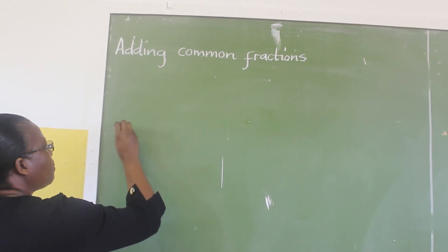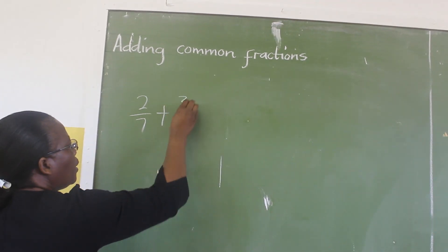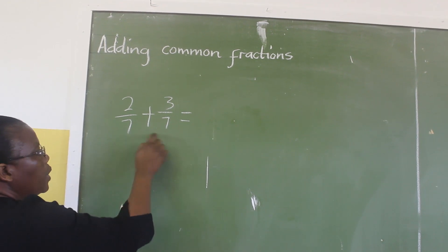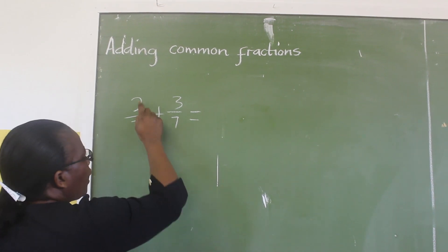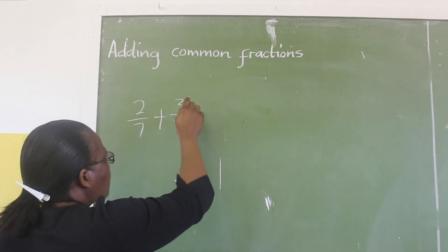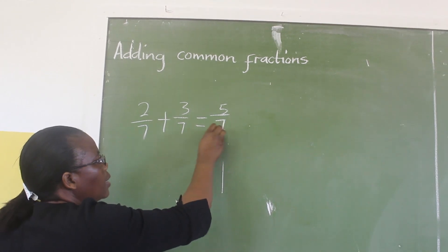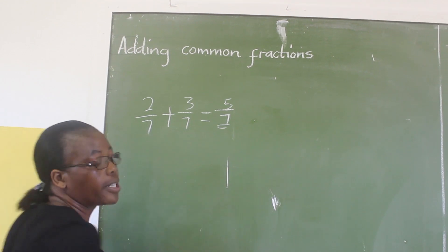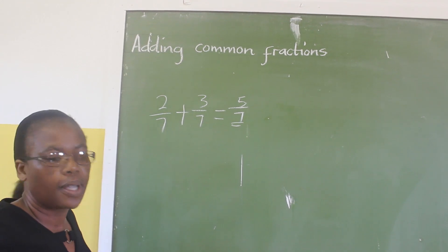For example, we are given something like 2 over 7 plus 3 over 7. This fraction is already an equivalent fraction. So we are adding the numerators. We say 2 plus 3, which is 5. Our denominator is 7. So the answer is 5 over 7. This is simple. If the denominators are the same, you just add the numerators.